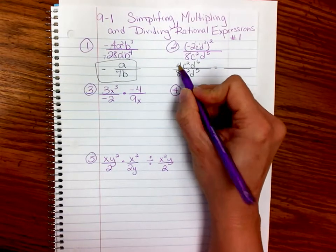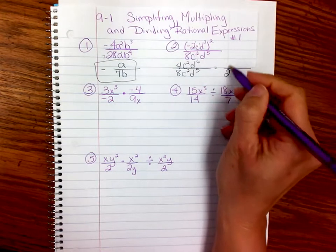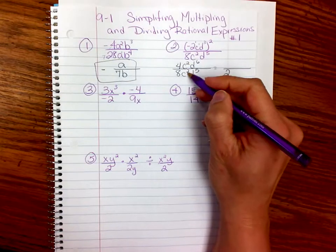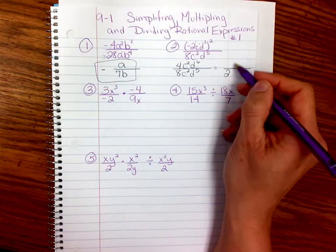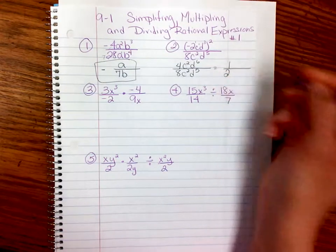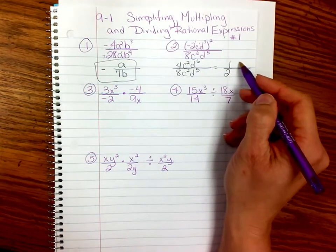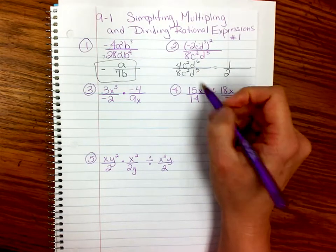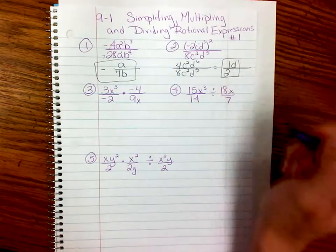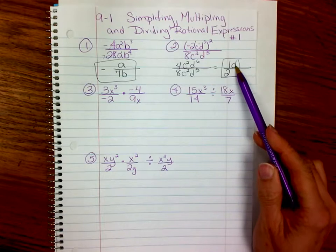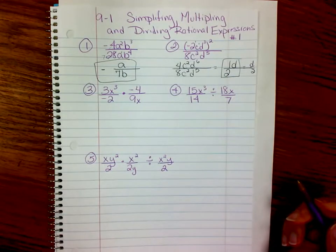And then we're just going to rewrite the bottom because there is nothing to simplify there. Fraction line, 8 and 4 reduce. 4 goes into 8 twice since 8 was in the bottom. The 2 is in the bottom. It's a common mistake people make that we want to put the number in the top. The c squareds are the same. Anything divided by itself is a 1. d to the 6 divided by d to the 5th. 6 minus 5 is 1. So I just get d to the first power. So that simplified is just d over 2.